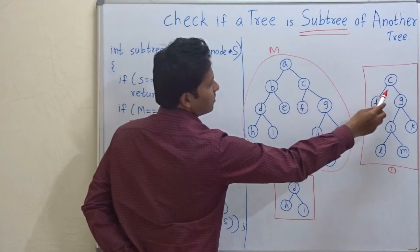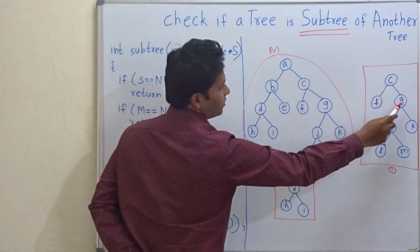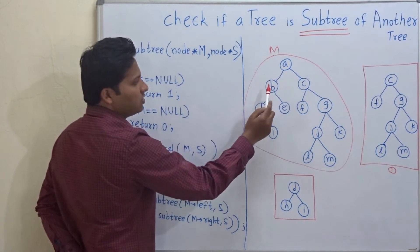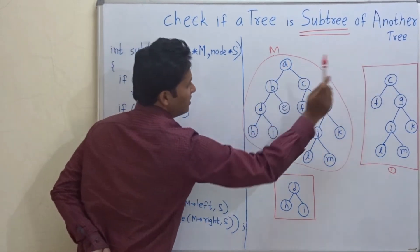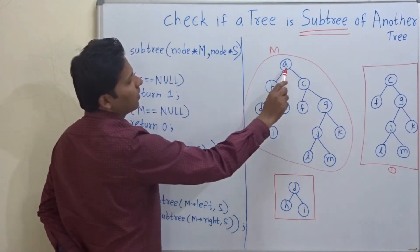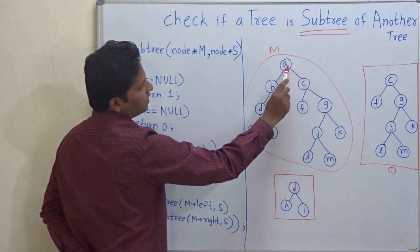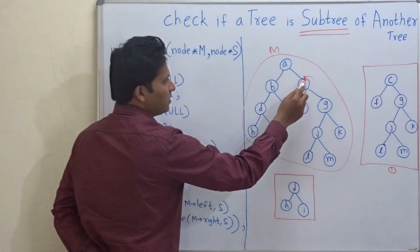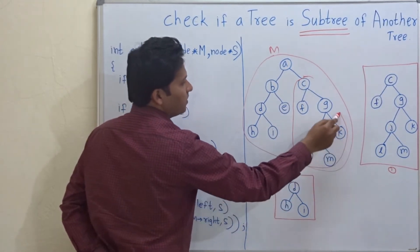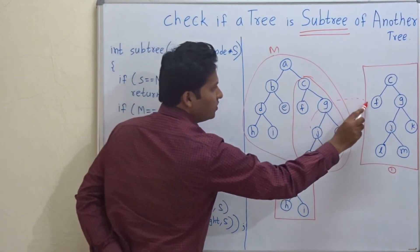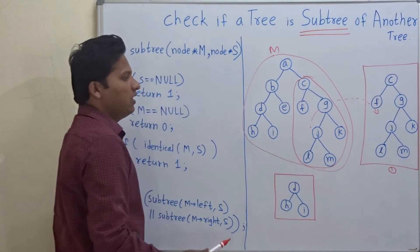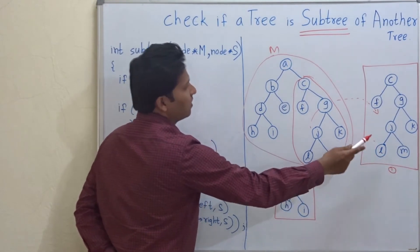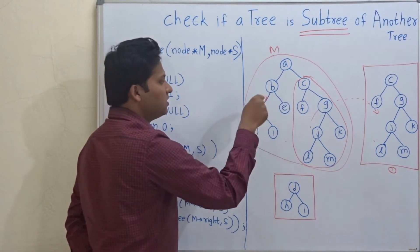So this tree is C, F, G, J, K, L, M. Here is A. Then on the left side of A, check whether there is any node whose name is C. No, there is no node. Now check on the right side of A. Yes, there is C. Then check whether the subtree rooted at C is identical to this tree or not. And if it is identical, then we can say that tree 1 is a subtree of this main tree.